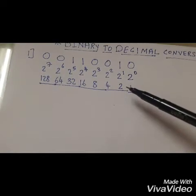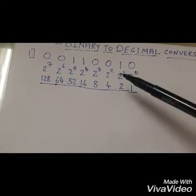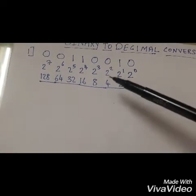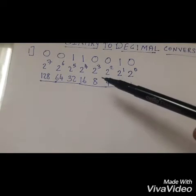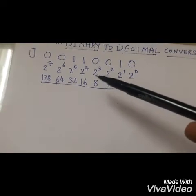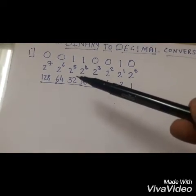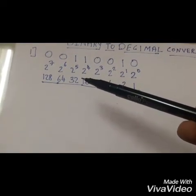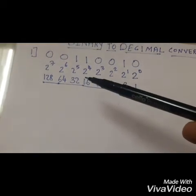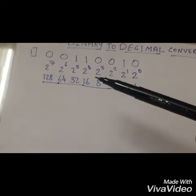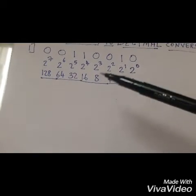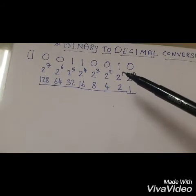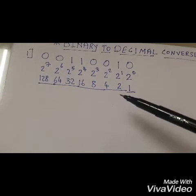The values we get are: 2 raised to 0 is 1, 2 raised to 1 is 2, 2 squared is 4, 2 cubed is 8, 2 raised to 4 is 16, 2 raised to 5 is 32, 2 raised to 6 is 64, and 2 raised to 7 is 128. Wherever there is a 1 in the binary number, we take that corresponding value and do the addition.